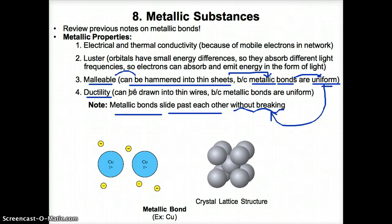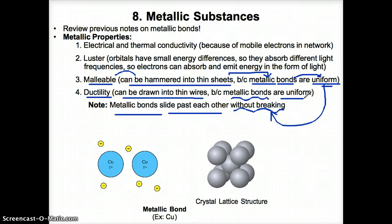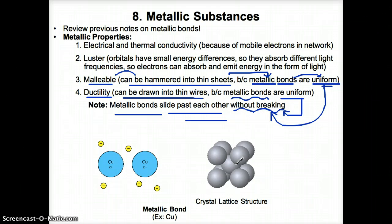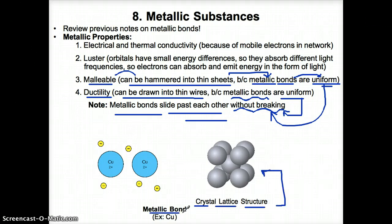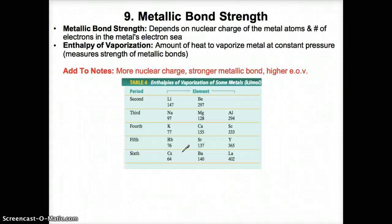Metallic substances also are ductile, meaning they can be drawn into thin wires, because metallic bonds are uniform as well, meaning they can slide past each other without breaking and rearrange themselves into a thin wire. Finally, metallic substances have a crystal lattice structure, much like ionic compounds do. An example of a metallic bond is Cu or copper, because any metal will have metallic bonds.